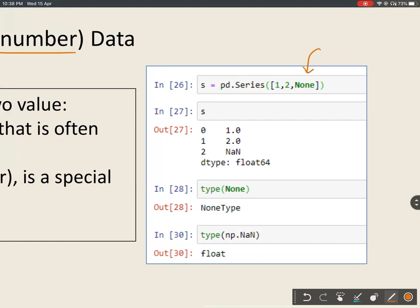In case of pandas, Python internally converts it into NaN, that is not a number. If you see the data type of None, it is of NoneType. When you see the type of NaN, it will be of float type.